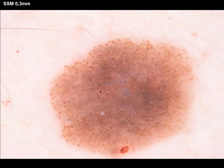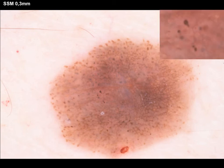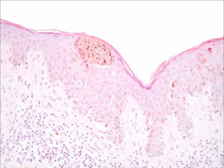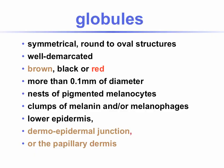Another case — this is a melanoma, 0.3 mm. You see multiple dots and globules throughout the lesion, irregular in size and distribution. In the center you see these multiple black dots. In histopathology of this case, you see the melanin accumulations in the epidermis. At higher power, the globules correspond to the black dots that were seen previously.